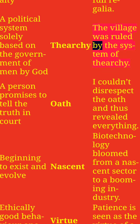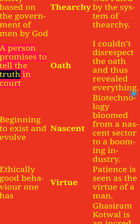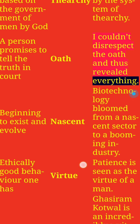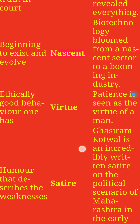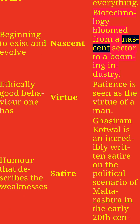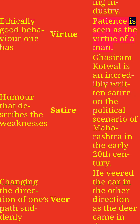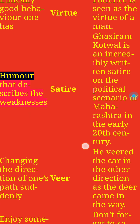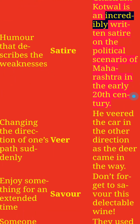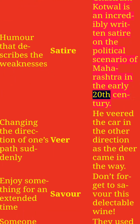The profession of teaching or the approach or style of teaching: Pedagogy. It was his unique approach to pedagogy that made him every student's favorite. The symbols of royalty: Regalia. The queen was adorned in full regalia. A political system based on the government by God: Theocracy. The village was ruled by the system of theocracy. A person who promises to tell the truth in court: Oath. I couldn't disrespect the oath and thus revealed everything. Beginning to exist and evolve: Nascent. Biotechnology bloomed from a nascent sector to a booming industry. Ethically good behavior: Virtue. Patience is seen as the virtue of a man. Humor that describes weaknesses: Satire. Ghassiram Kotwal is an incredibly written satire on the political scenario of Maharashtra in the early 20th century.